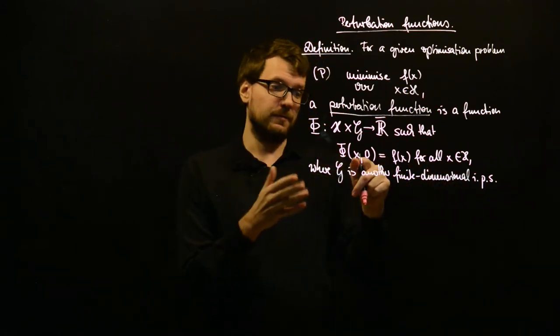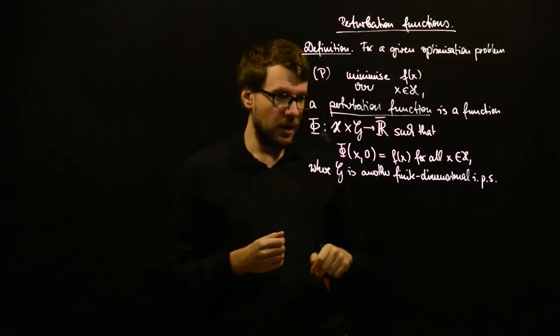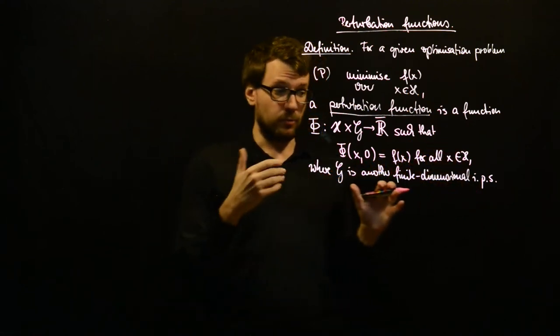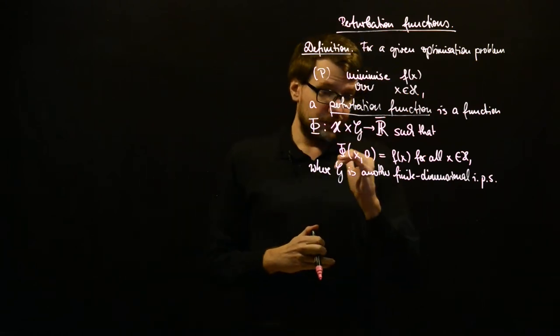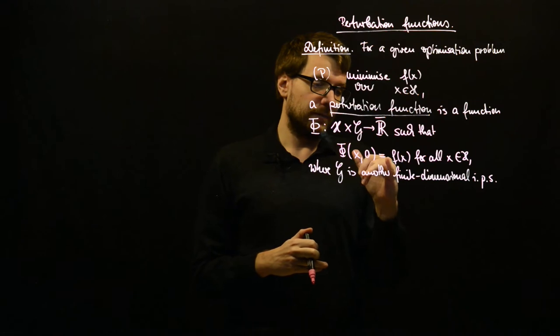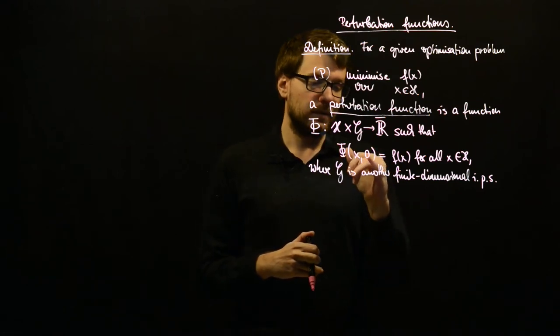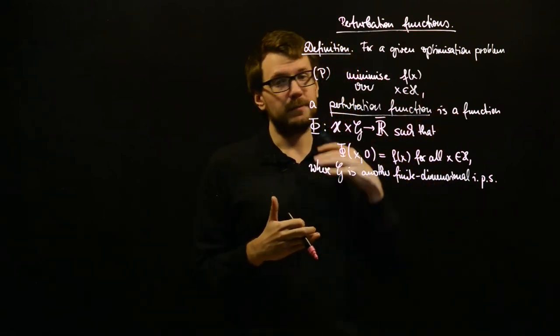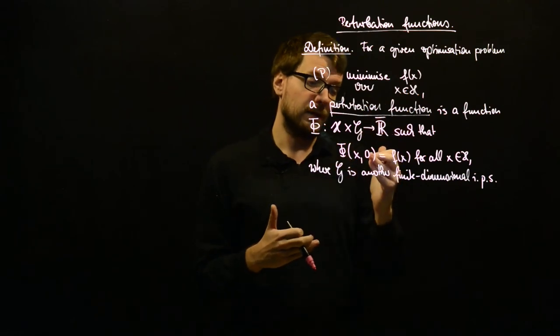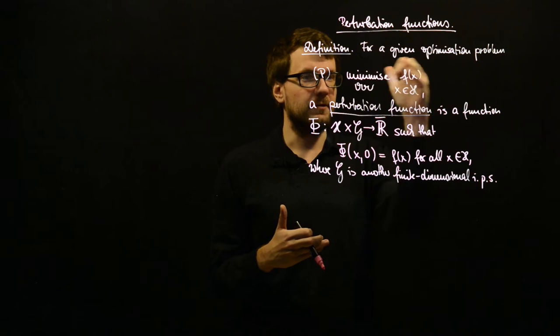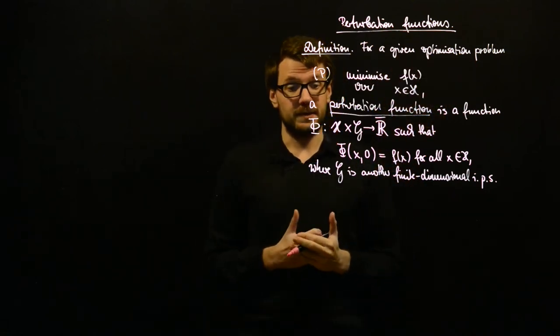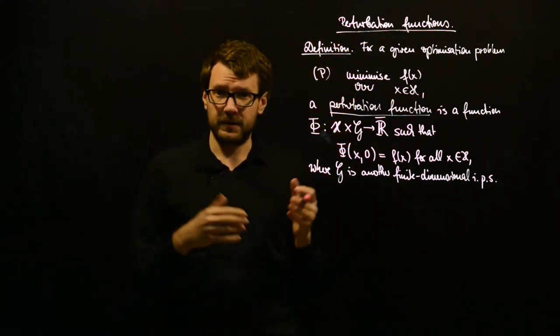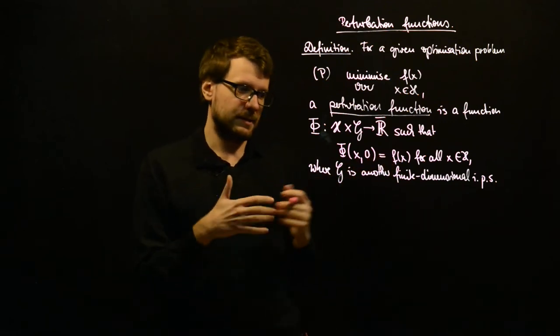So, perturbation function obviously makes sense because we assume that we can use different variables in phi, and we still get some optimization problem, which is in some way perturbed. And if we have the perturbation zero, then we just recover this original optimization or minimization problem. And we now want to discuss different examples so that you get a feeling what makes sense in a different context.